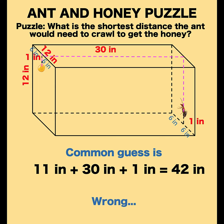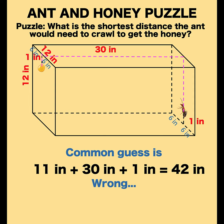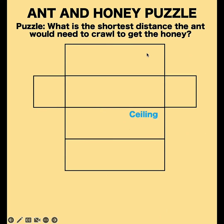Unfortunately, this is not the correct answer. To identify the shortest distance, we need to think outside the box. One way of answering this problem is to open up the box. This is the ceiling of the box, this is the floor of the box, and these are the sides.